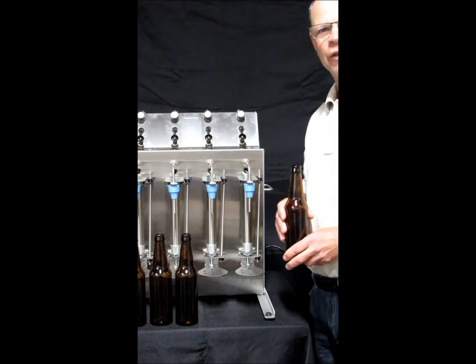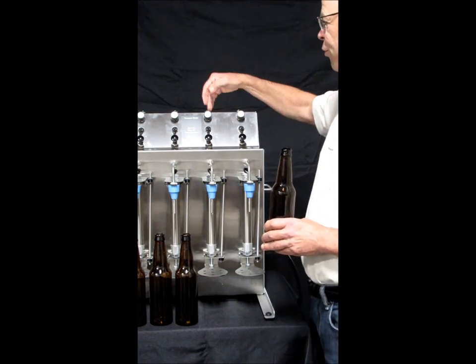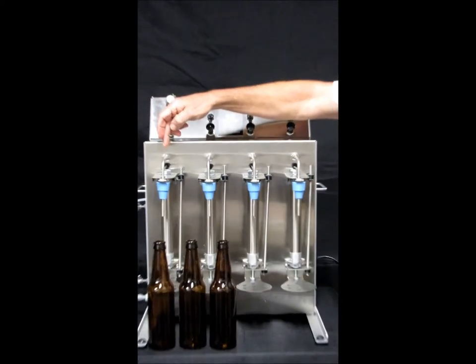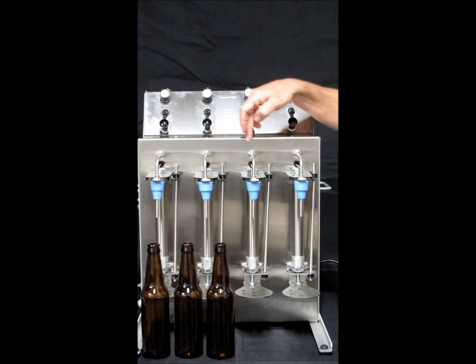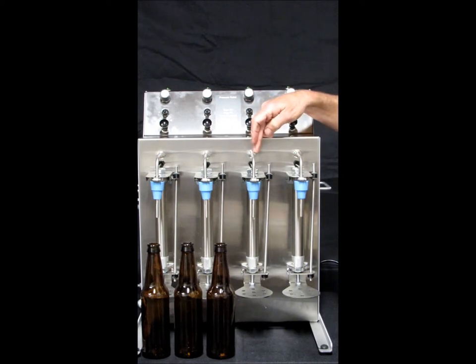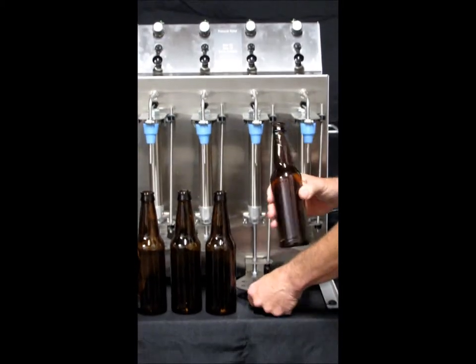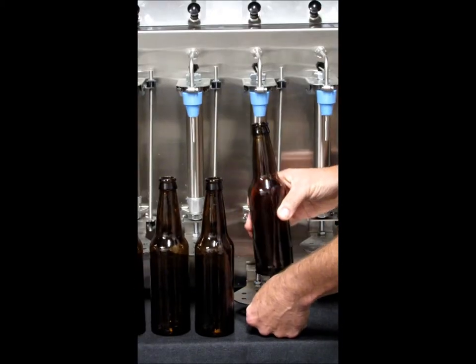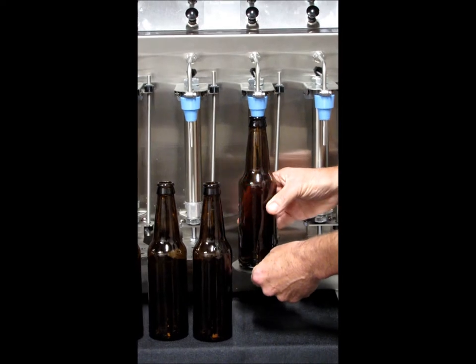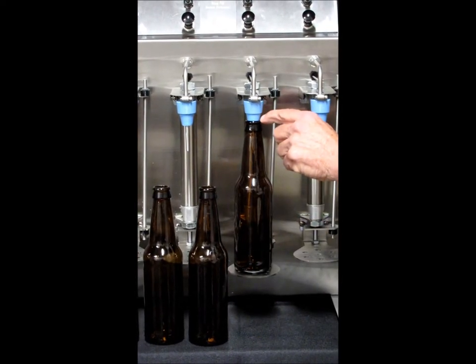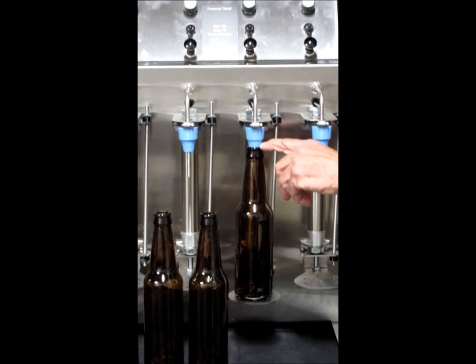Okay, now we're ready to fill. We're going to start with spout three. We count the spouts from the left, so this is spout one, two, three, four. We're going to start with spout three. And the way that works is you just simply push the foot down, put the bottle in place, let the actuator rise up. There's a spring here that will hold that in place gently against the stopper.